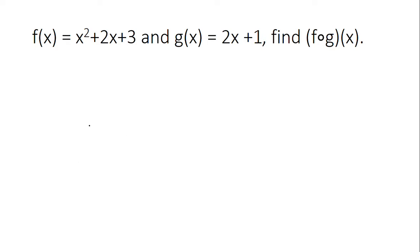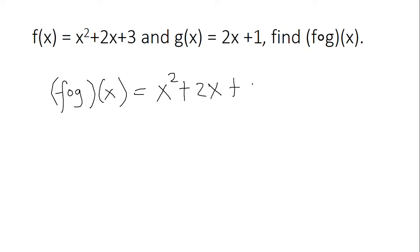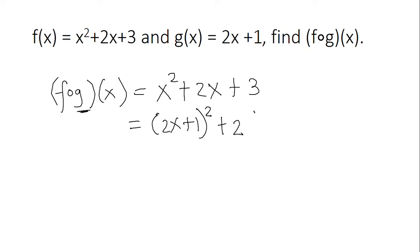Now we find f circle g of x using the same given. The first function name is f of x: x squared plus 2x plus 3. The second function is g of x. We replace our x by g of x, which is 2x plus 1, and square that — giving us (2x plus 1) squared — plus 2 times (2x plus 1), plus 3.